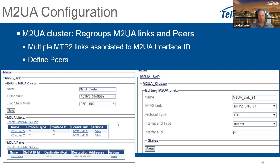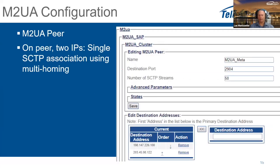After the M2UA link, configure the M2UA peer. Create a new M2UA peer, give it a name, and specify the destination port — this is where you will send the data. Configure the destination IP and port. Normally with MetaSwitch, there is only one IP destination, but it's possible to have more than one. If one becomes unavailable, it fails over to the other IP address.